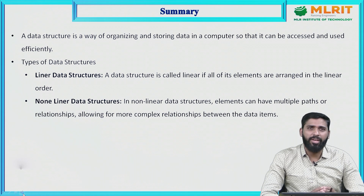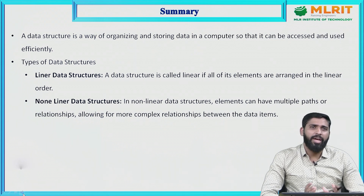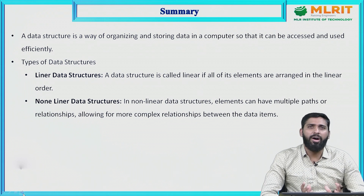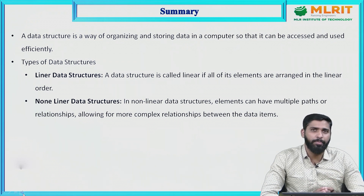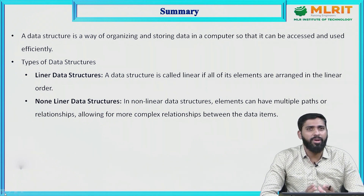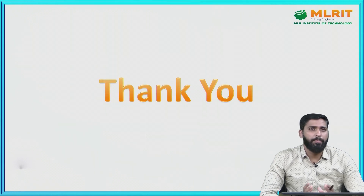Summary of today's class: a data structure is a way of organizing and storing data in a computer so that it can be accessed and used efficiently. There are two types: linear data structures, where data is stored sequentially and all elements are arranged in linear order; and non-linear data structures, where elements have multiple paths or relationships. In the next class, we are going to learn about abstract data types. If you have any doubts, place them in the comment section and I will answer all the questions. Thank you.